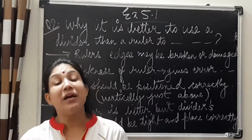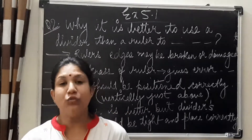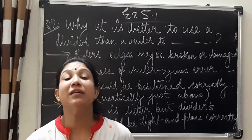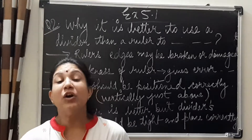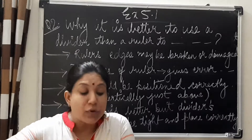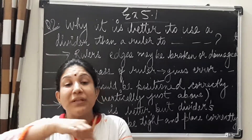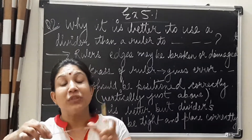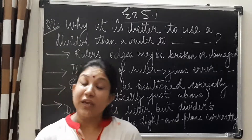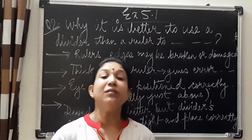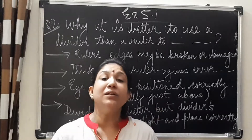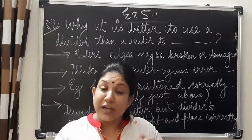The second error is that while measuring with the ruler, the scale or ruler is sometimes very thick. You see in the market so many fashionable scales are available. When you place such a ruler on your notebook and measure, the thickness of the scale also introduces error while measuring.